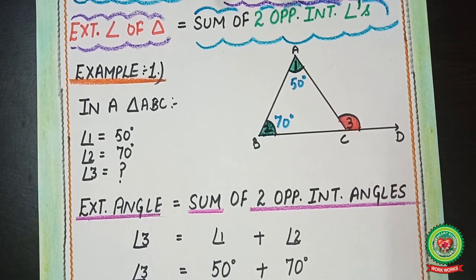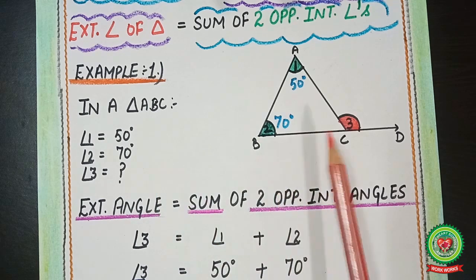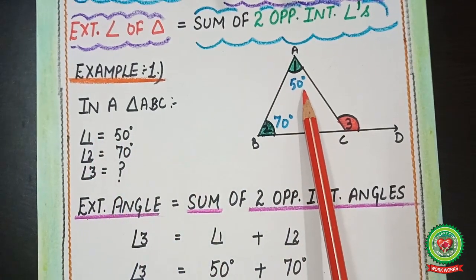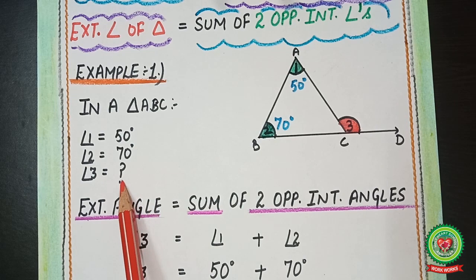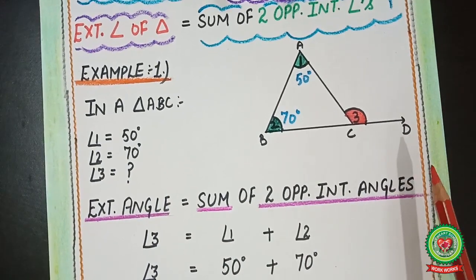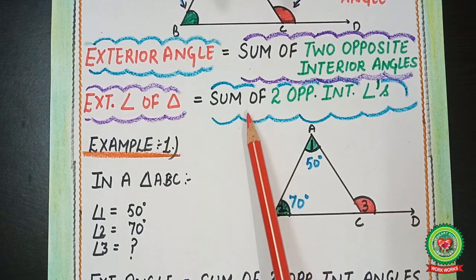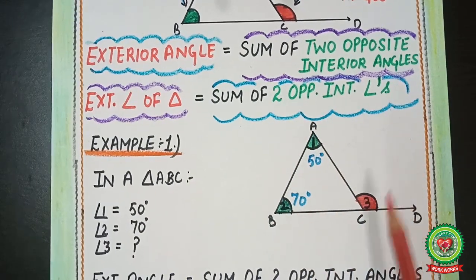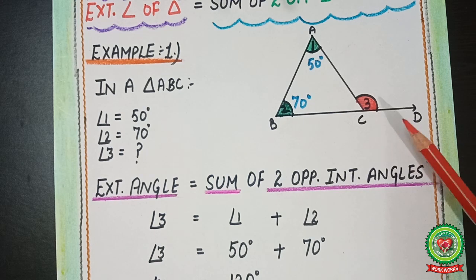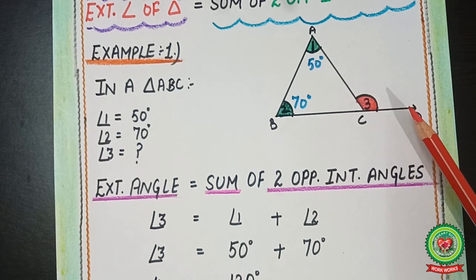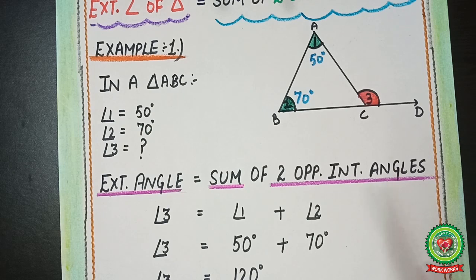In triangle ABC, angle one is 50 degrees, angle two is 70 degrees, and angle three is unknown — we put a question mark. Whenever we have an exterior angle and need to find any exterior or interior angle, we apply the exterior angle property. So we apply: exterior angle equals sum of two opposite interior angles.